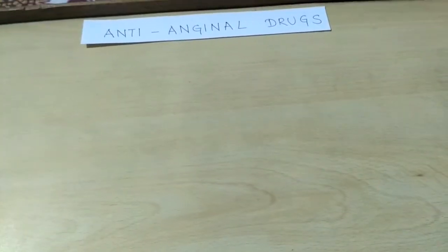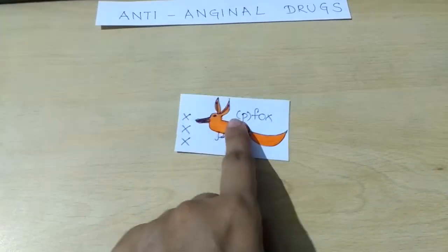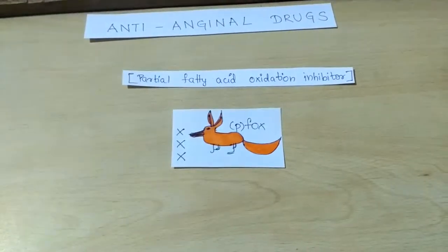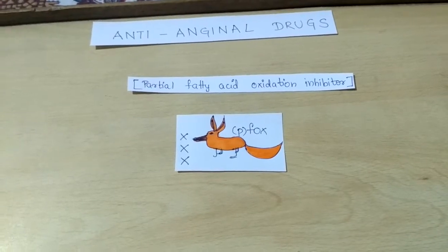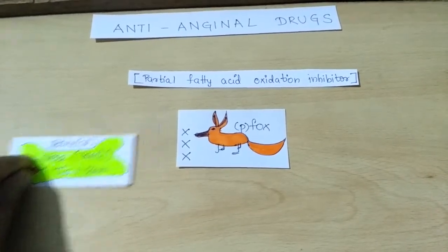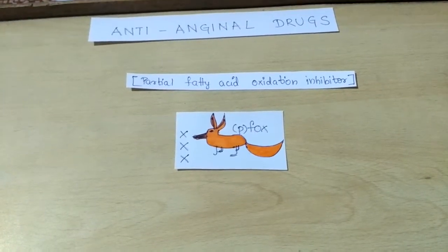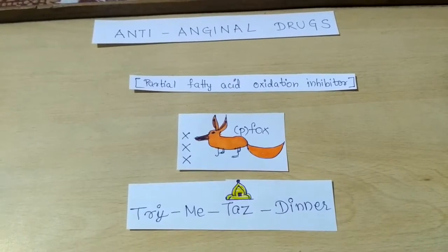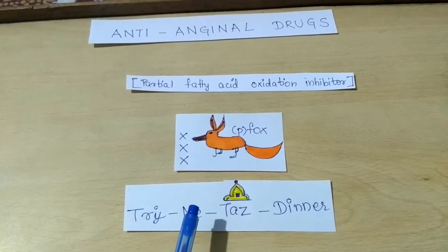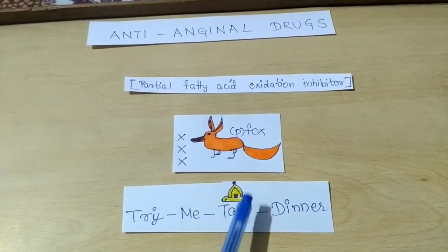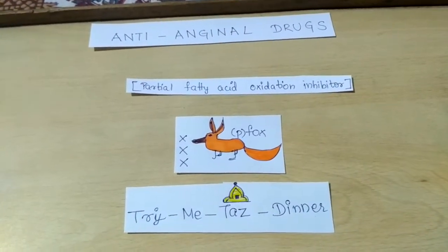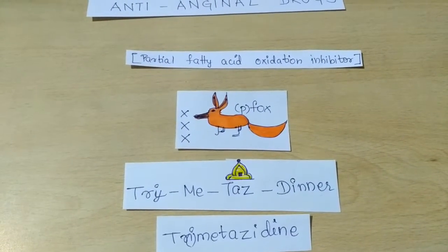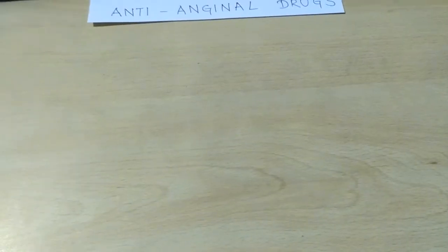After this we'll see the fox — the partial fatty acid oxidation inhibitor. This fox tries to eat the bone thrice. She says that instead she would have tried eating a Taj dinner — a Taj hotel dinner. So 'try me' means fox, and 'Taj dinner' gives us the drug Trimetazidine.